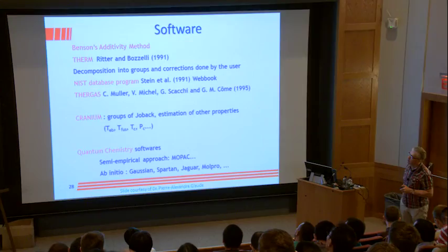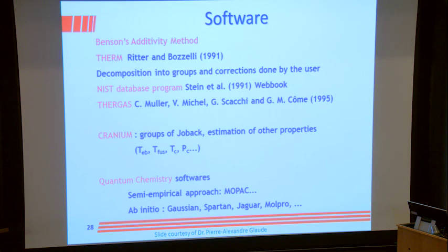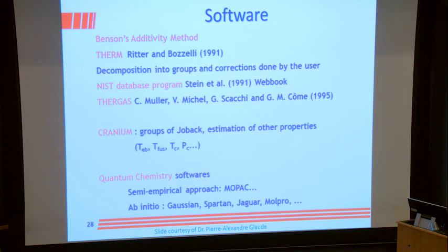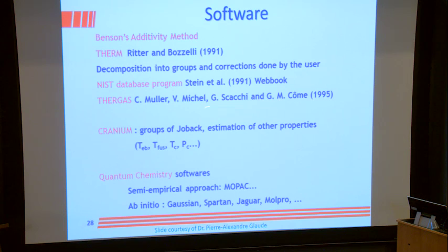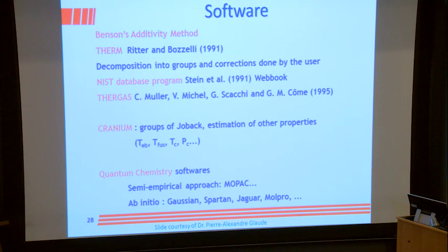The software to use is THERM — that's the first one, and that's why in Livermore we've always used it, updating the group values. The NIST database also has a program online; if you go to the NIST WebBook, you can use that. Thurgass was developed by Combs' group, now Frédéric Battin-Leclerc's group in Nancy, and is available if you ask them.